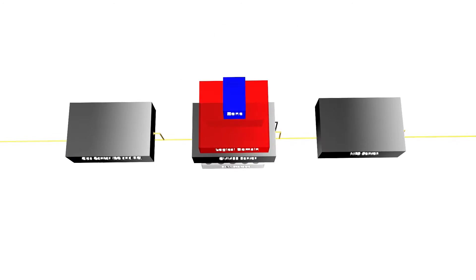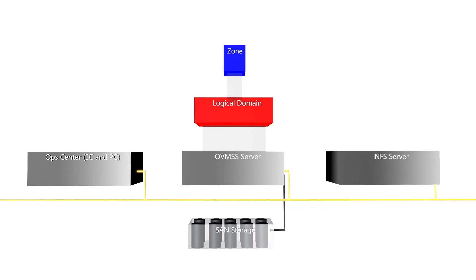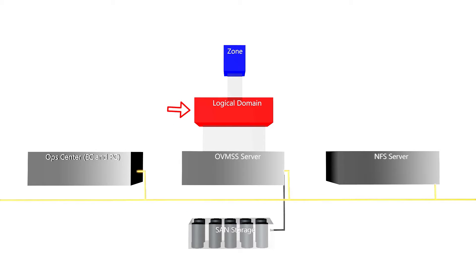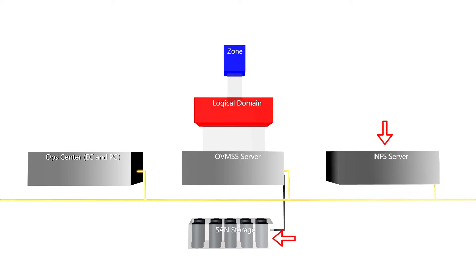A simple layered virtual environment in Ops Center consists of an enterprise controller, a proxy controller, a discovered and managed Oracle VM Server for SPARC virtualization server, a logical domain on the virtualization server, a non-global zone within the logical domain, storage resources, and at least one network.